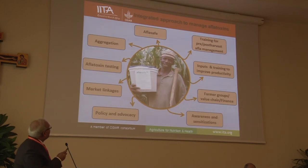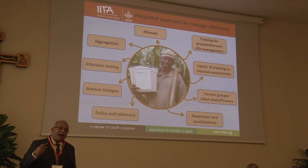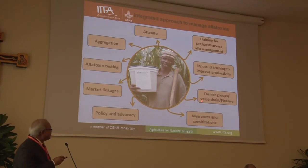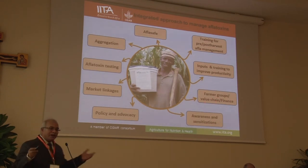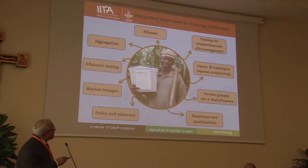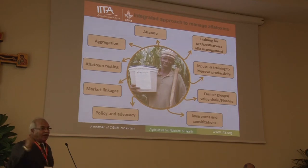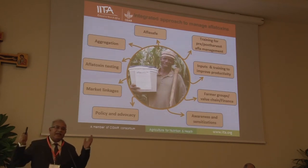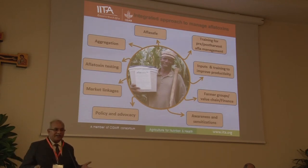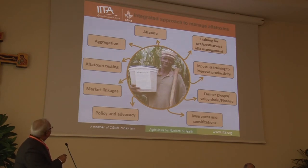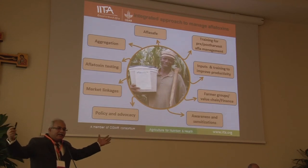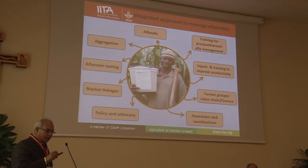What we then did was develop an integrated management approach for aflatoxin, involving farmer groups and a value chain. Financing banks come forward to finance aggregators or implementers, who work with groups of 200 to 1,500 farmers. They provide inputs and training to improve productivity and yield, provide training in pre- and post-harvest management, and use AFSAFE — generating a large quantity of quality maize. After aggregation, aflatoxin testing is performed and the grain is sold into the created market.